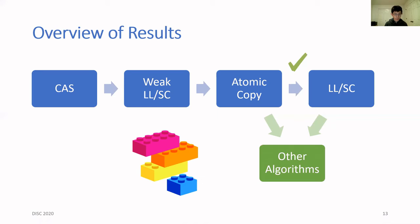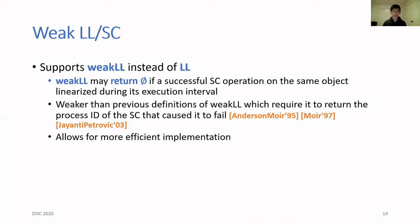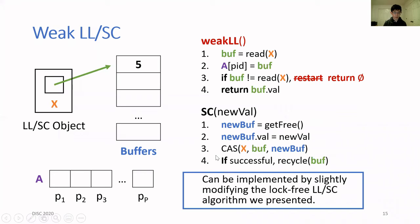We've seen that atomic copy leads to a very easy implementation of LL/SC from compare-and-swap. Hopefully this gives you some sense for why we believe the primitive is so useful. Now we focus on actually implementing this atomic copy primitive. It turns out that implementing atomic copy runs into some ABA problems, so it's helpful to first implement a weaker form of LL/SC. A weak LL/SC object supports two operations: SC, which behaves just like before, and weak LL. The difference is that weak LL is allowed to fail if a successful SC operation linearized during its execution interval.